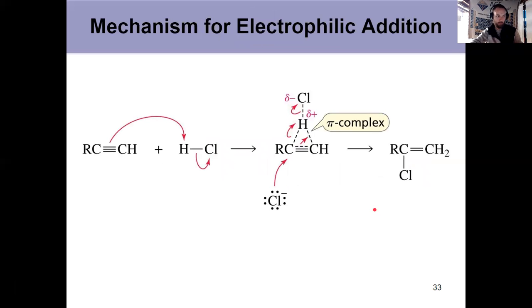What's the mechanism? My first arrow starts at my pi bond, attacks the hydrogen electrophile, breaks this bond which goes to chlorine. That is the exact same as what we had in chapter six. The only difference here is the intermediate, because as we just mentioned, it goes through the pi complex.